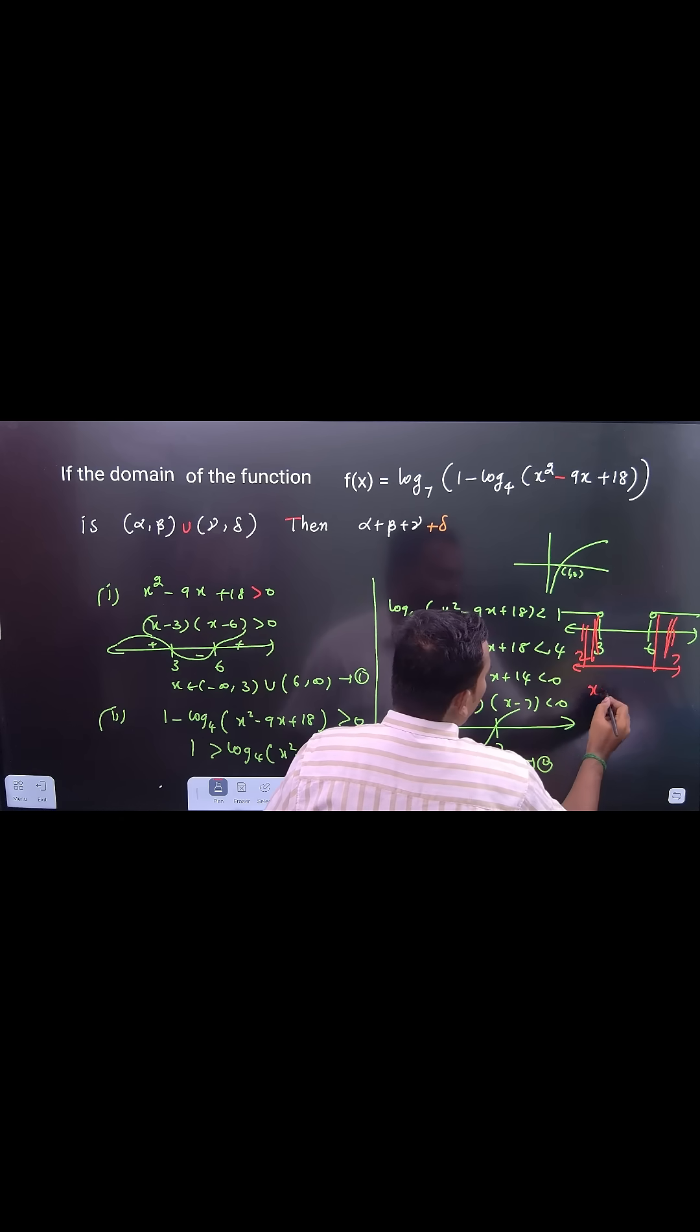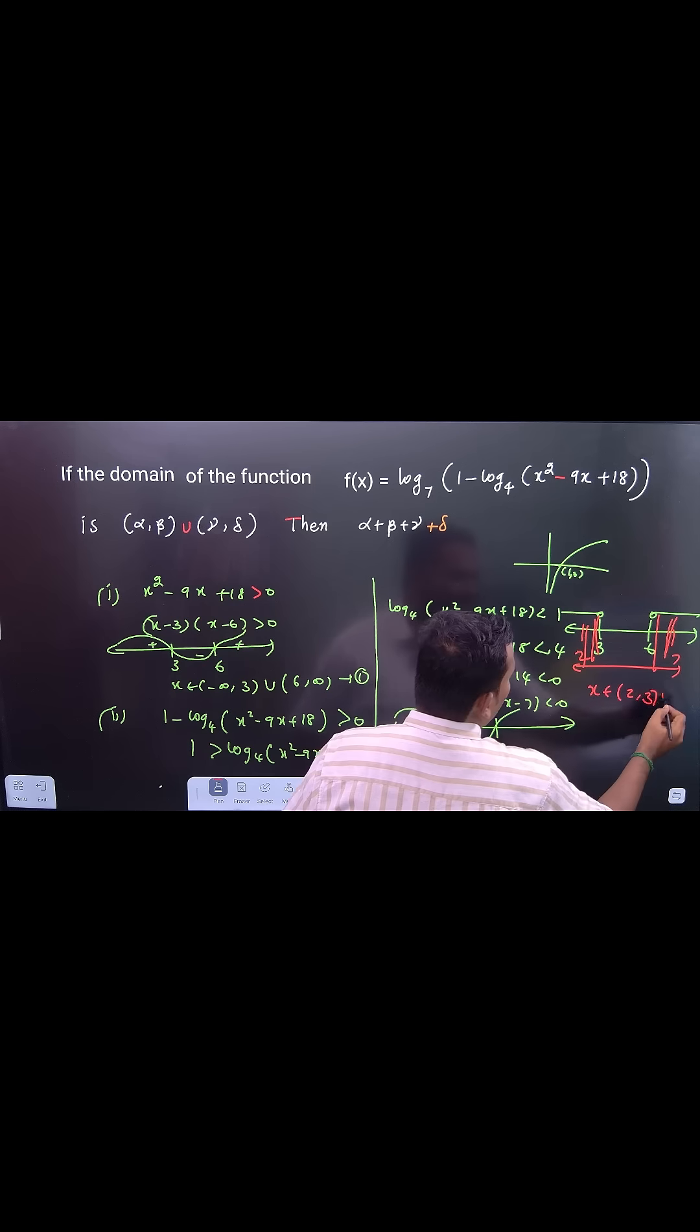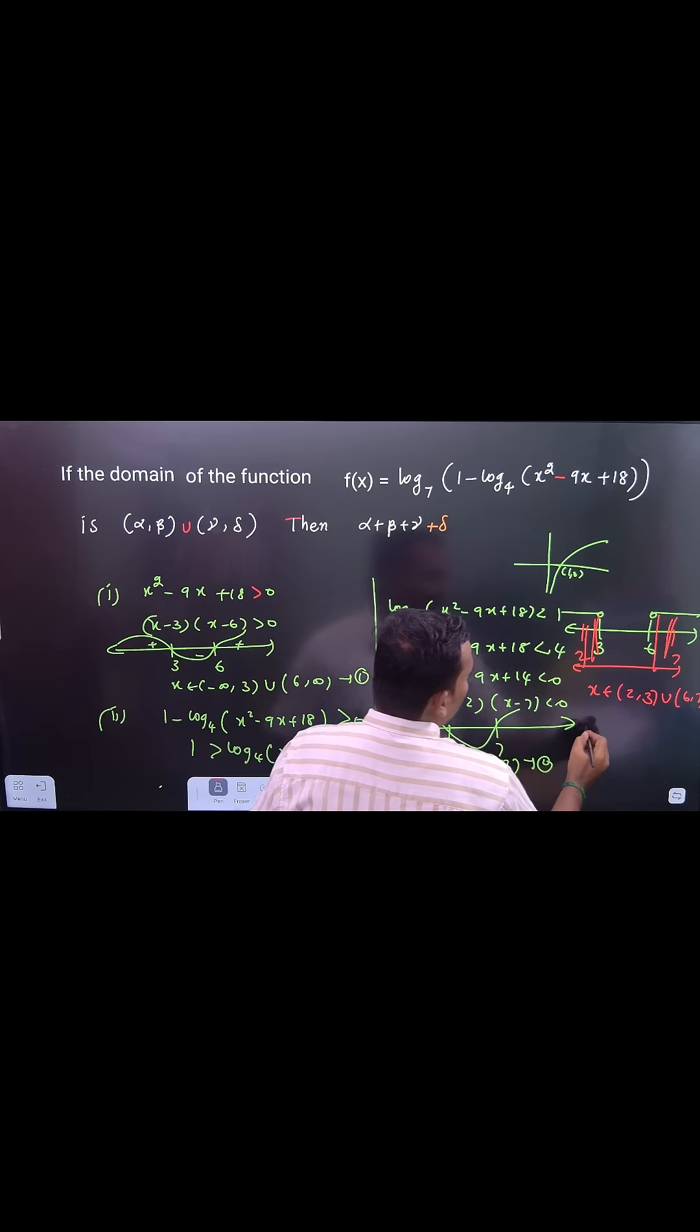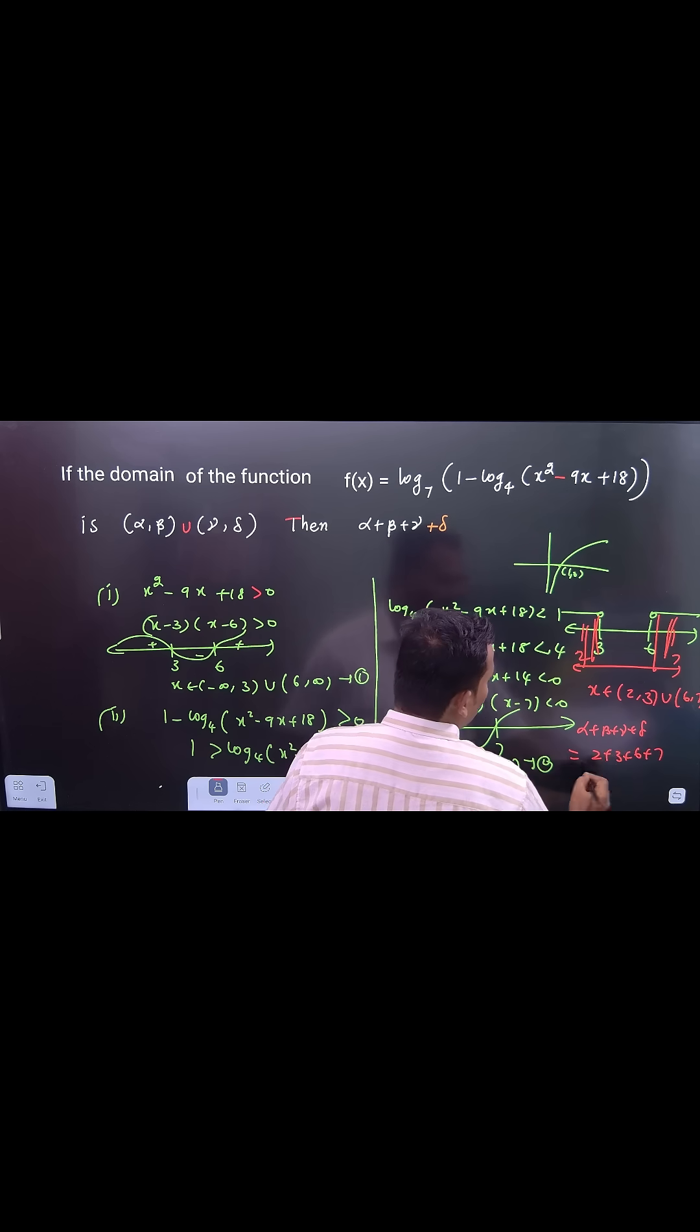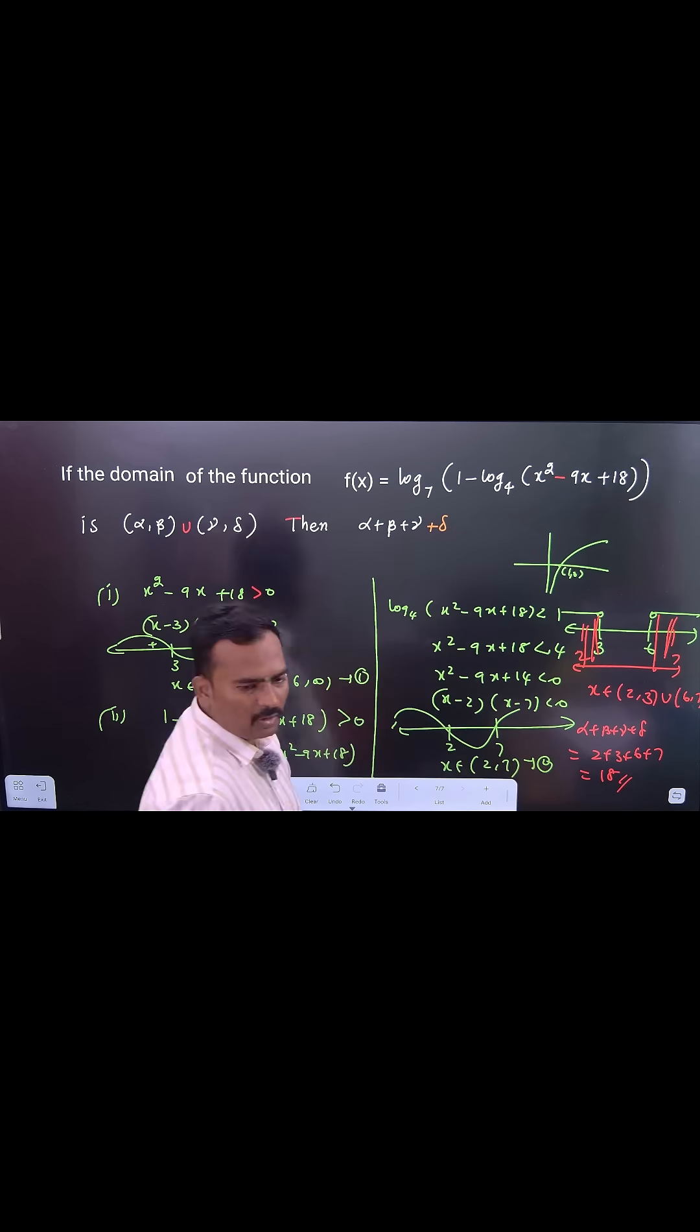Therefore α + β + γ + δ is equal to 2 + 3 + 6 + 7. It is 18, is your answer. I hope everyone understands.